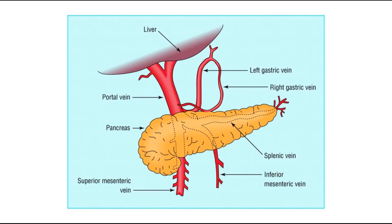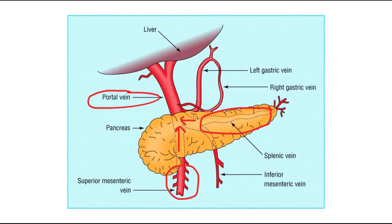This picture shows the anatomy of the portal vein. You can see the superior mesenteric vein, which drains part of the intestine, and also the splenic vein. The superior mesenteric vein connects to the splenic vein and they together form the portal vein. This is the portal vein where portal hypertension occurs.